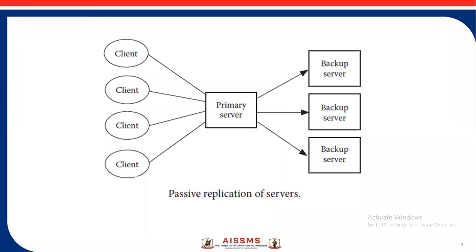If the primary is up and running and provides the desired service, and if the request from the client does not modify the state of the server, no further action will be necessary. If however the client action modifies the server state, to keep the state of the backup server consistent, the primary performs an atomic multicast of the updates to the backup server before sending the response to the client. If the primary crashes, one of the backup servers will be elected as the new primary.